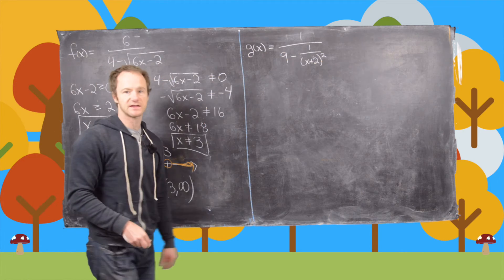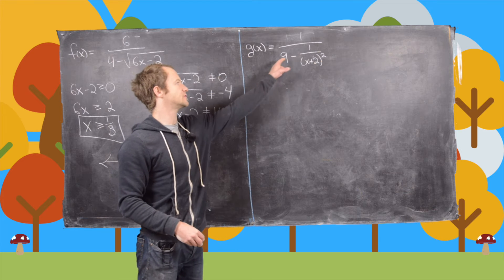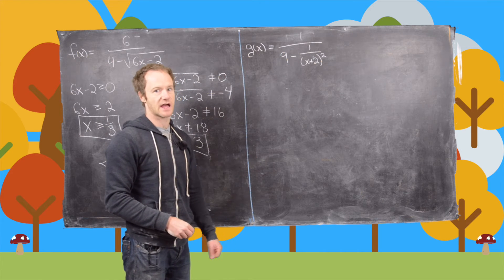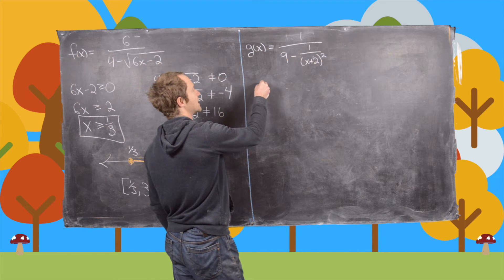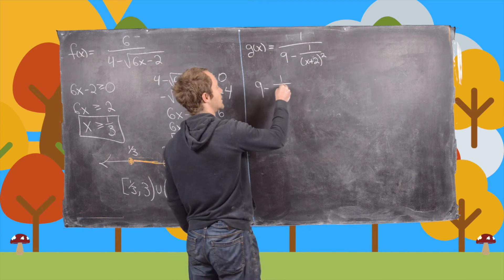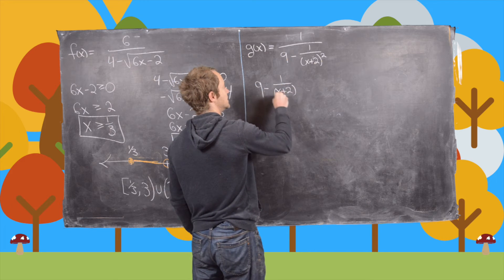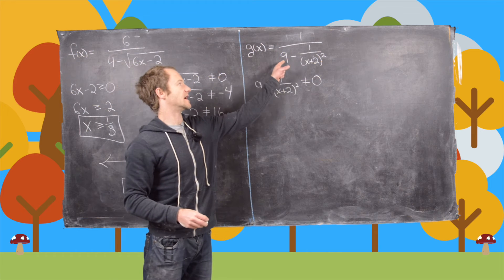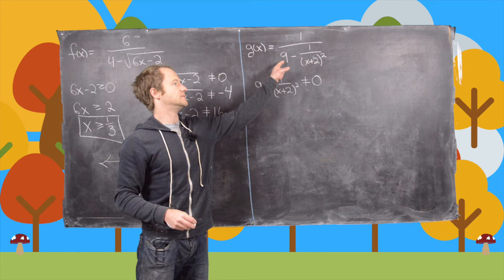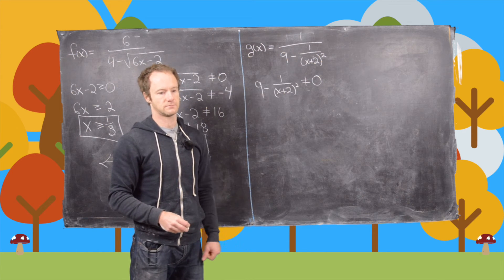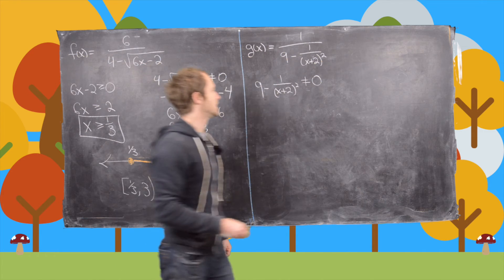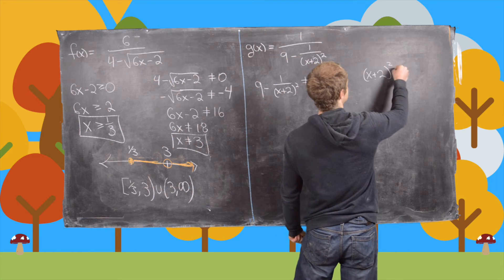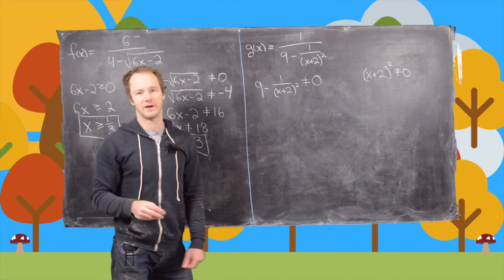Now let's move on to the next function. This one looks a little complicated — notice we've got denominators within denominators. We're going to need 9 minus 1 over (x plus 2) squared to be not equal to 0, because that's the first denominator, and we're also going to need (x plus 2) squared to be not equal to 0, because that's the inner denominator.